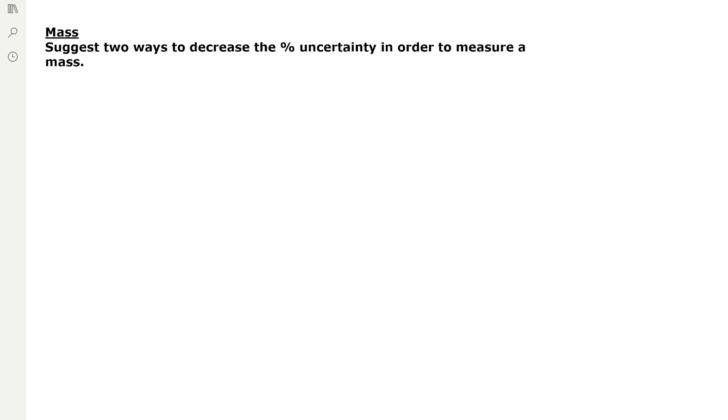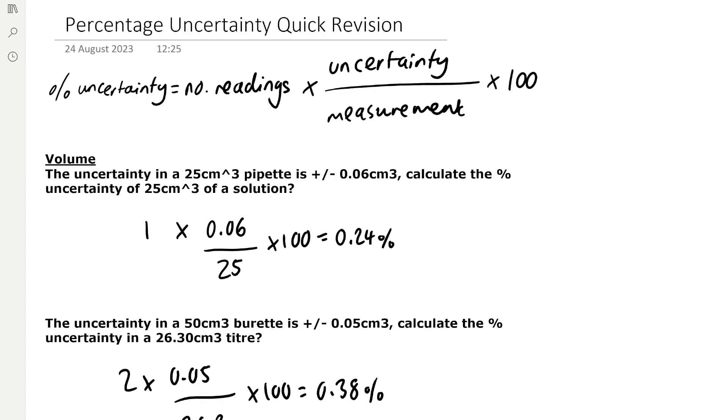we need to suggest two ways to decrease the percentage uncertainty in order to measure our mass. If we look at our formula, we can see that there's only two real ways that we can reduce the percentage uncertainty. And that's either to decrease the uncertainty on the top of the fraction, or we can increase the measurement on the bottom of the fraction.